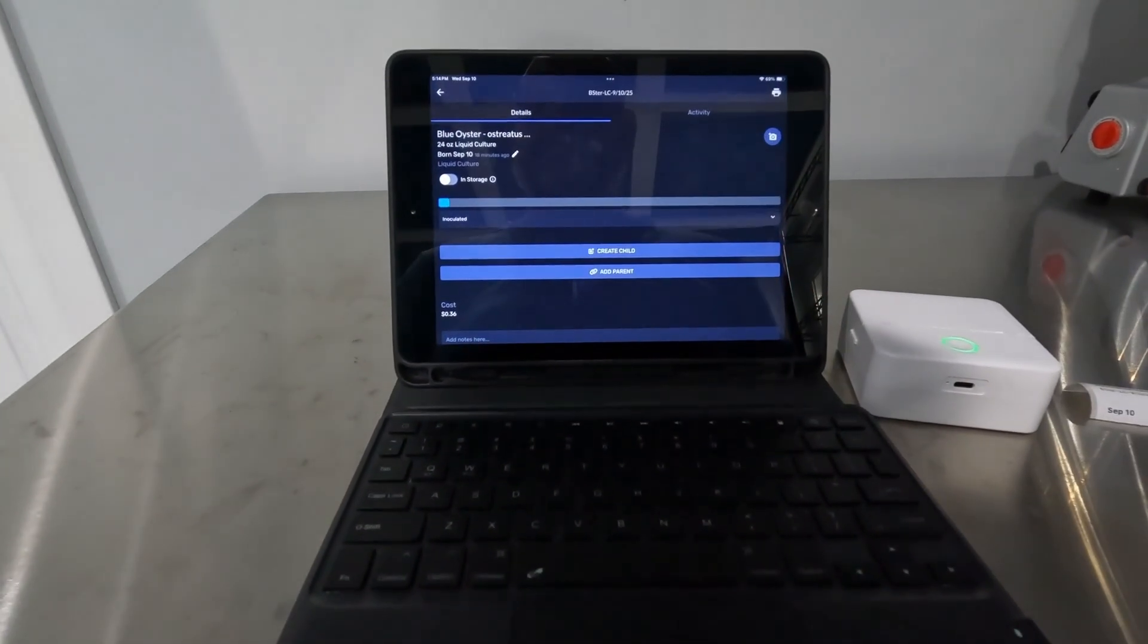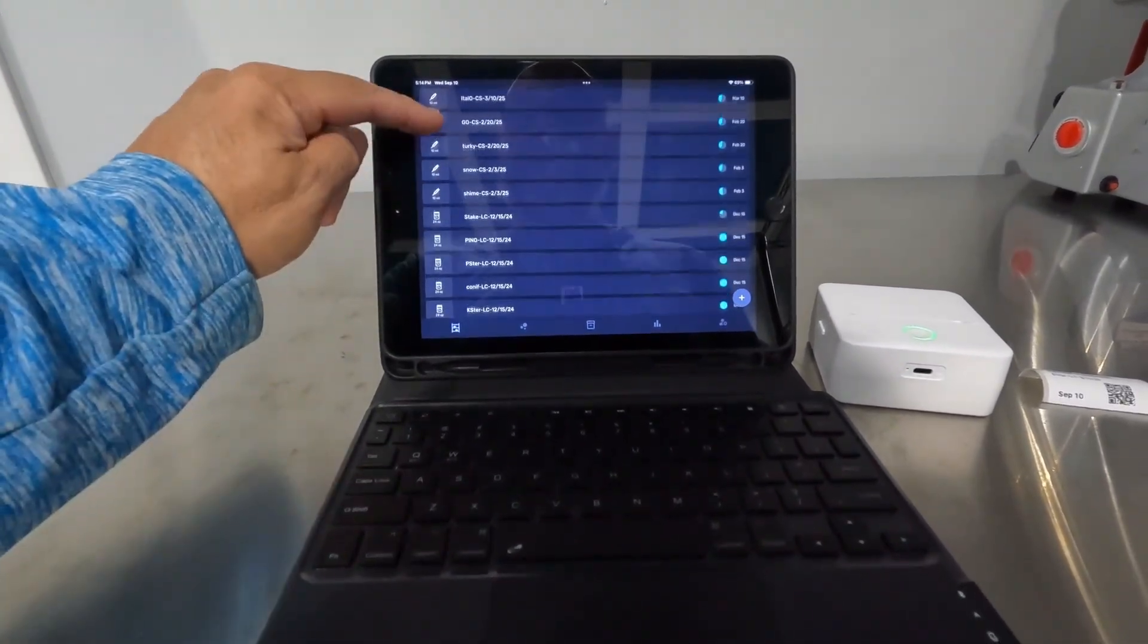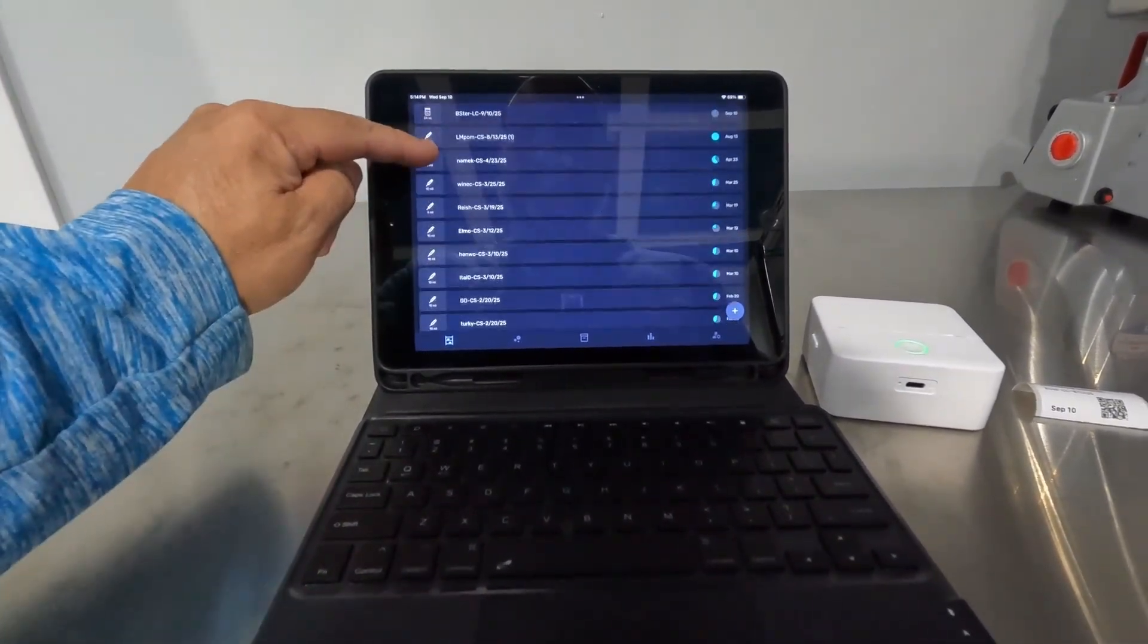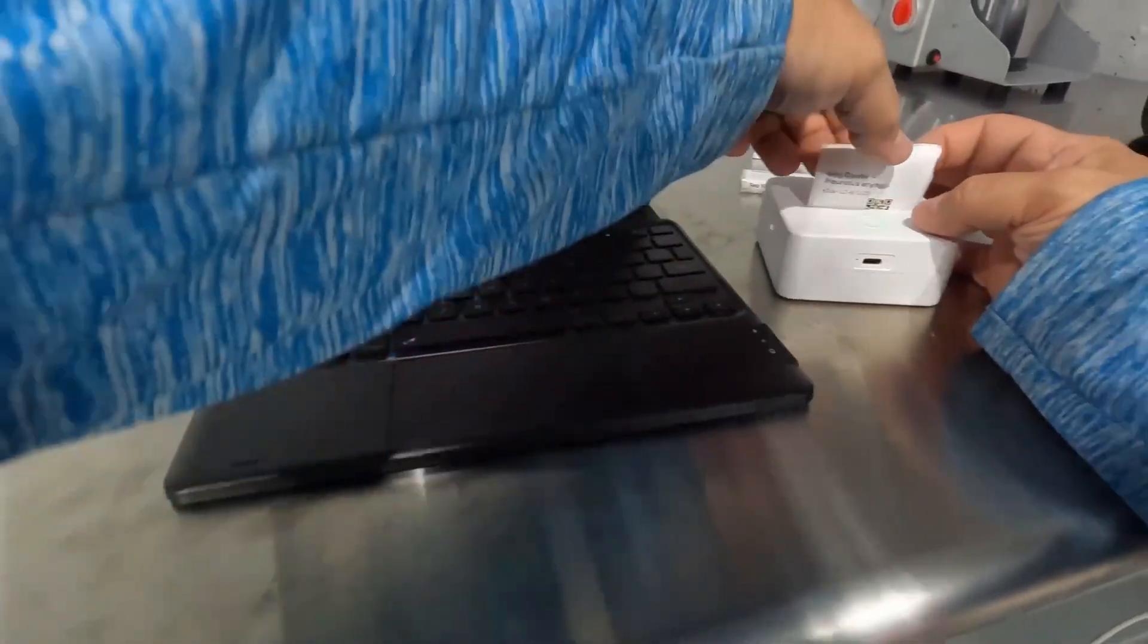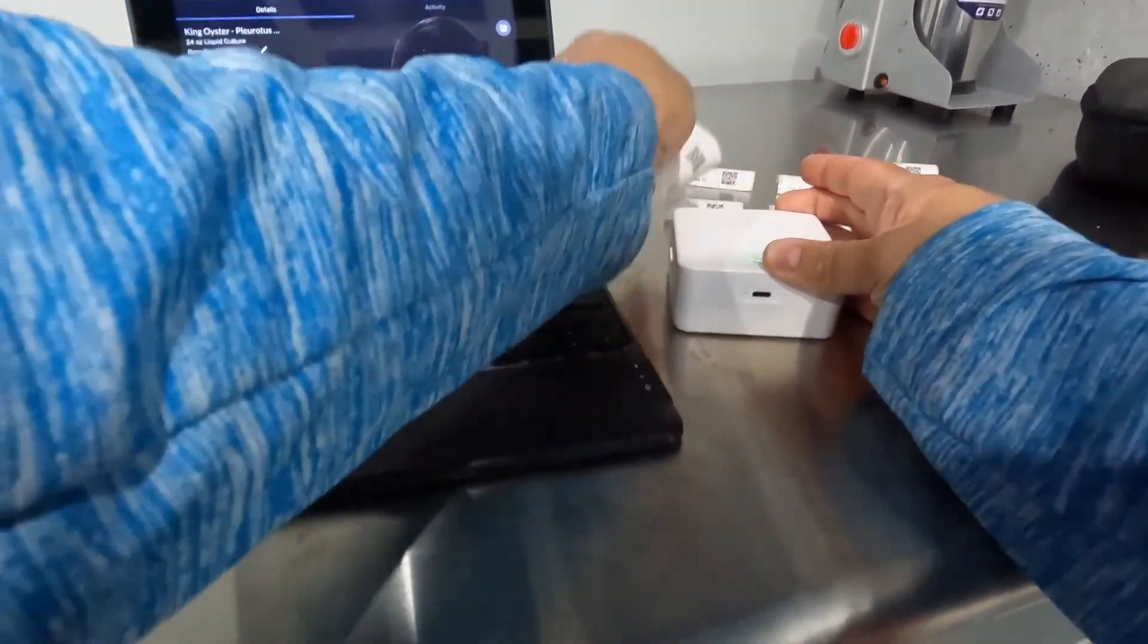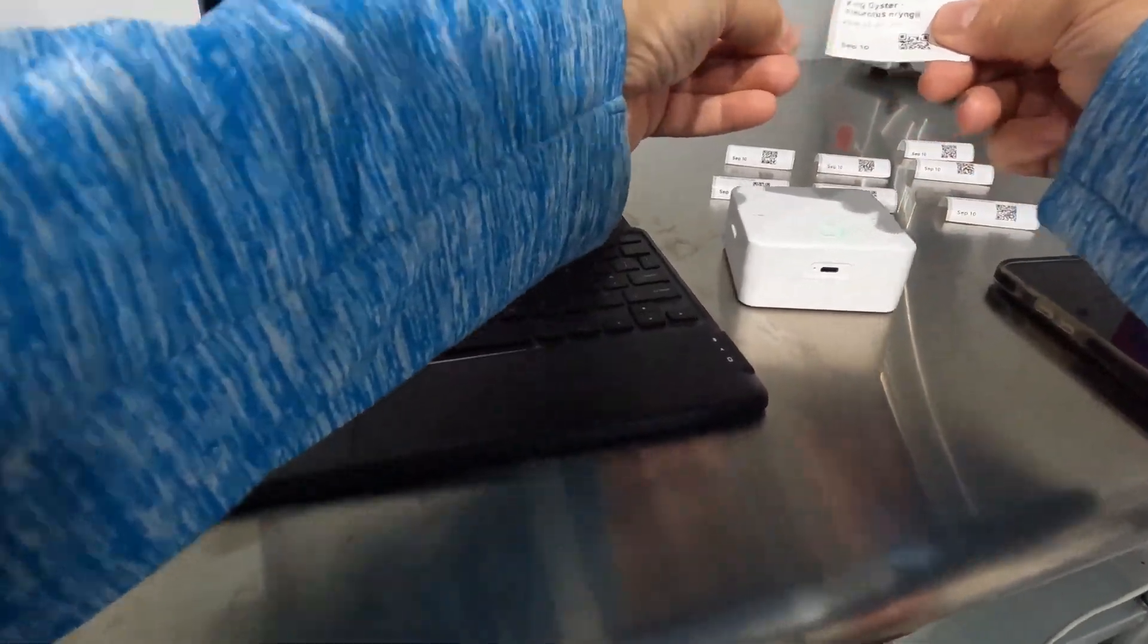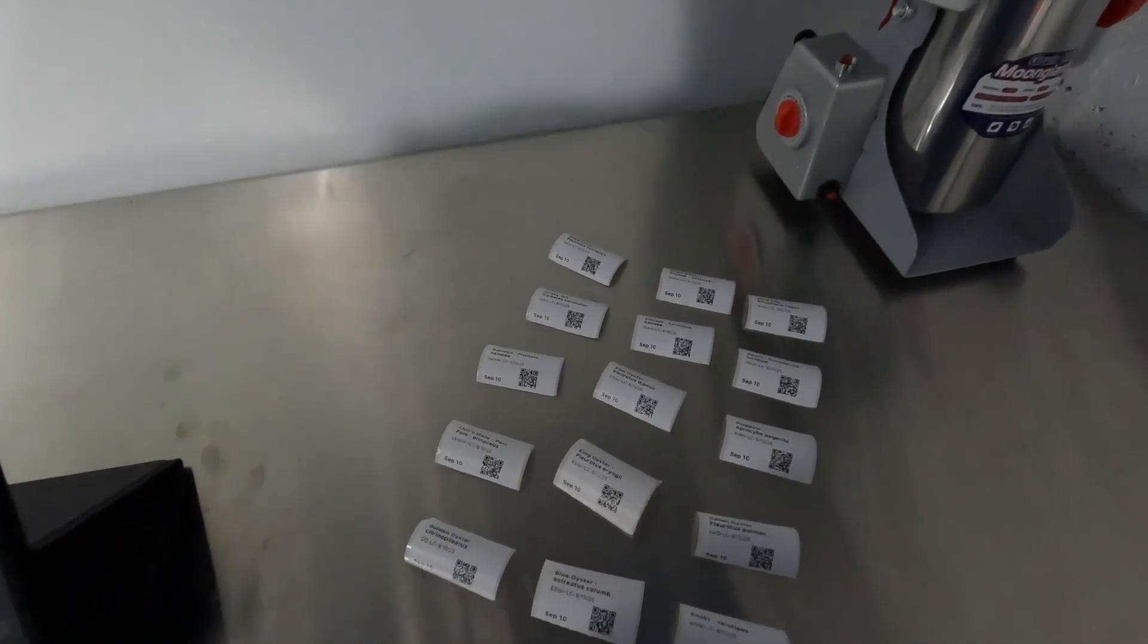While that's cooling down, we use Mycofile. So shout out to the guys at Mycofile. We pretty much run everything and catalog all our spawn and cultures and even our fruiting through there. It's very easy to just create the QR codes and create the labels for whatever you're doing, in this case for the liquid culture. So we're going to be doing about 18 different cultures in this batch.